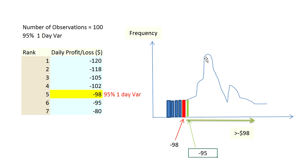When you do historical simulation, what's important to remember is that we do not care about the distribution. In other words, the actual historical profits and losses of a particular portfolio will not follow a particular distribution — and that's fine, the distribution does not matter. This red bar represents the 95% VaR of 98 dollars, and the green one is 95. That's historical simulation — we take actual profits and losses and calculate VaR without assuming any distribution.